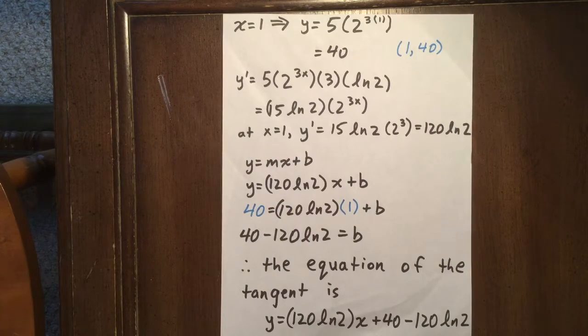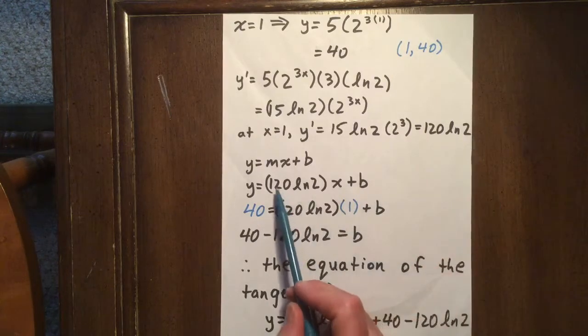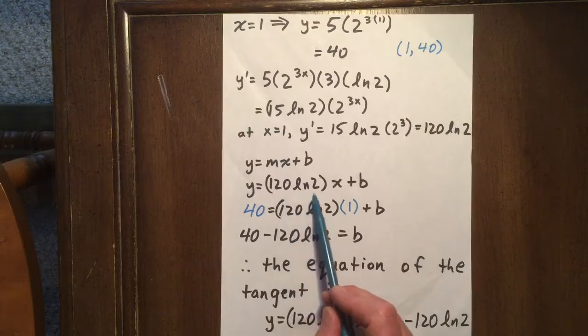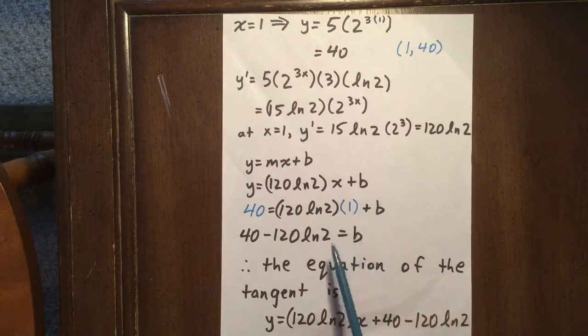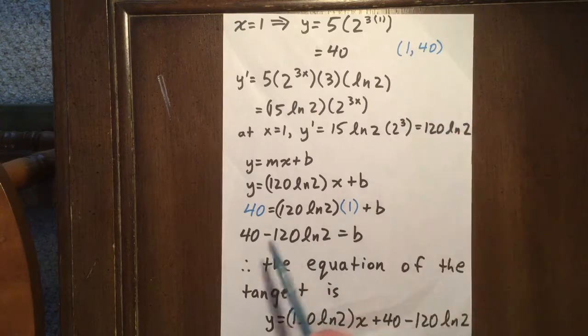We know y equals mx plus b. We can substitute this in for m, giving us y equals 120 ln 2 x plus b. Then we can substitute in 40 for y and 1 for x.